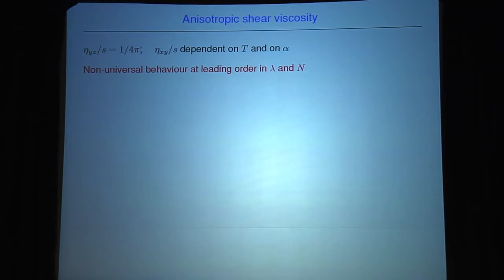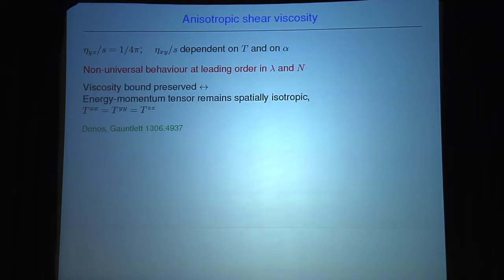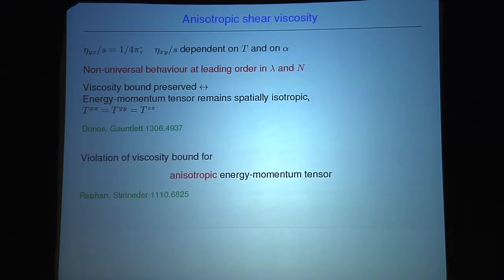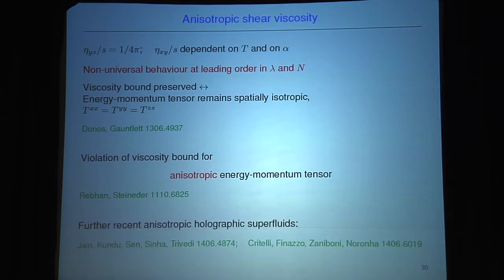We see non-universal behavior at leading order in both λ and N. Interestingly, we preserve the viscosity bound. As pointed out in this paper, this may be related to the fact that the energy-momentum tensor remains spatially isotropic — T_xx, T_yy, and T_zz are still the same despite the rotational breaking — and this seems closely related to the fact that the bound is preserved. There are other models where there is actually a violation of the viscosity bound for anisotropic systems, but there the energy-momentum tensor is also anisotropic — a big difference from our model.